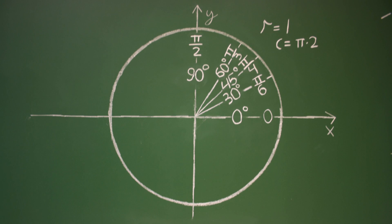0, 30, 45, 60, 90, that's why I love unit circle trigonometry. 0, 30, 45, 60, 90, that's why I love unit circle trigonometry.